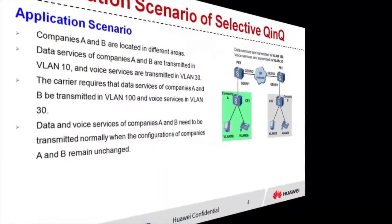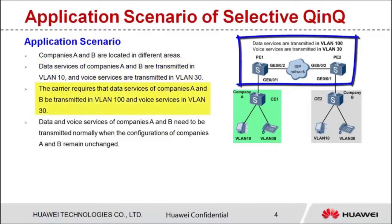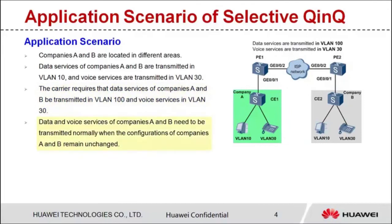Let's see the application scenario and configuration method of selective QNQ. As shown in the figure, companies A and B are located in different areas. Data services of companies A and B are transmitted in VLAN 10, and voice services are transmitted in VLAN 30. The carrier requires that data services be transmitted in VLAN 100 and voice services in VLAN 30. Data and voice services of companies A and B need to be correctly forwarded without changing the networking.